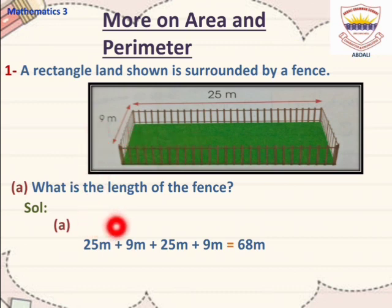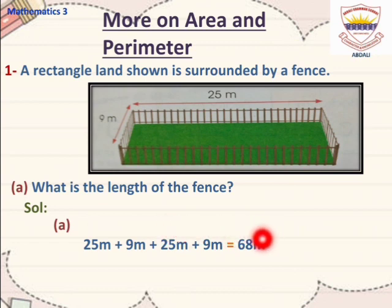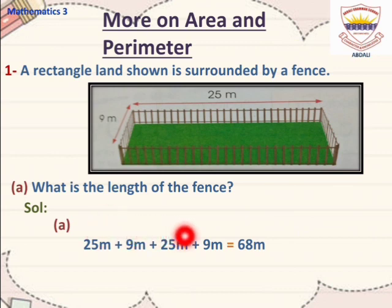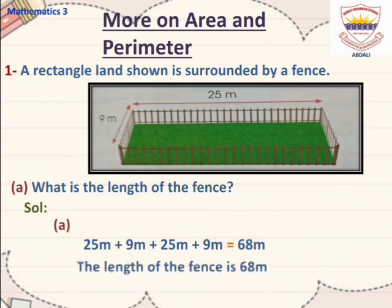Now students, add all the sides of the rectangle: 25 plus 9 plus 25 plus 9. When we add all the sides of the rectangle, we get 68m. The length of the fence is 68m.